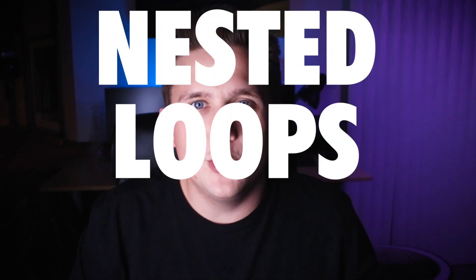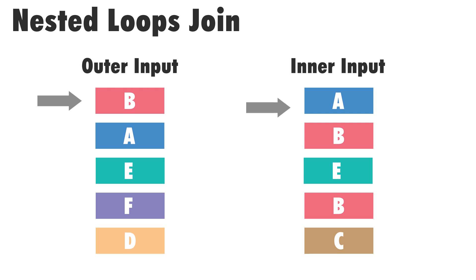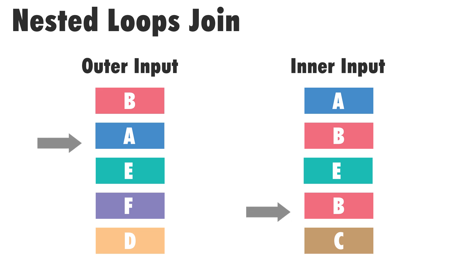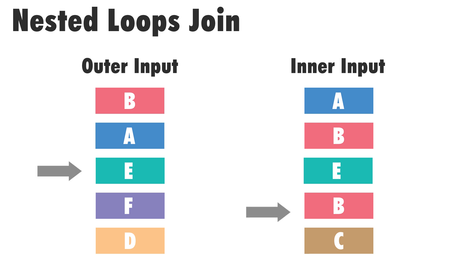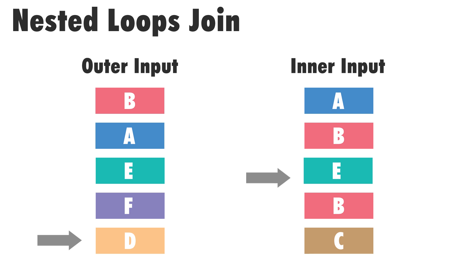The first physical join operator I want to talk about today is the nested loops join. The nested loops join works like this: we start with the first value in our outer table and then we iterate over every value in our inner table, comparing the values each time to see if there's a match. If a match is found, SQL Server sends that to the output of our join operator. If no match is found, the inner loop iterator continues to the next row. Once it runs out of rows, it increments the outer loop iterator and the process repeats itself until all of the data has been looped over and compared.